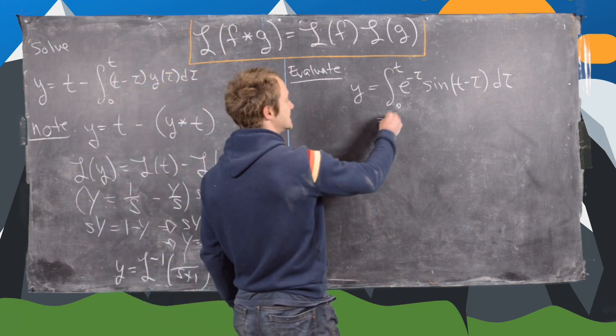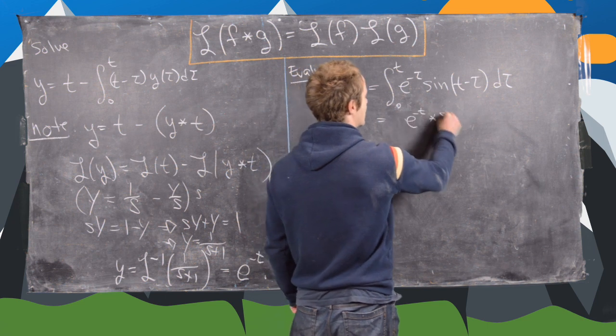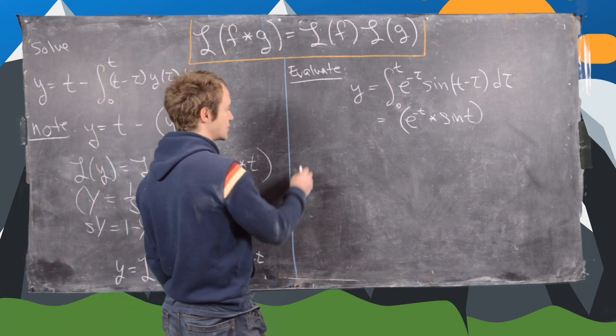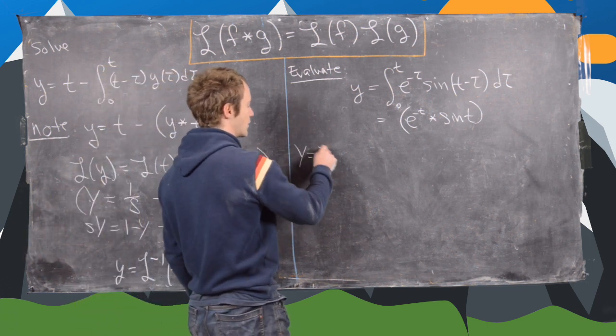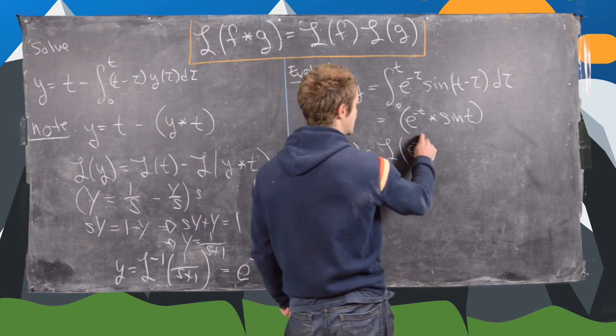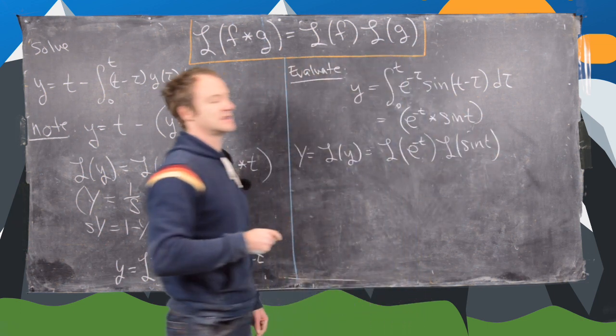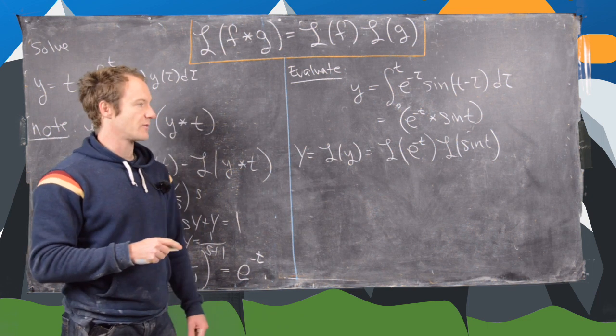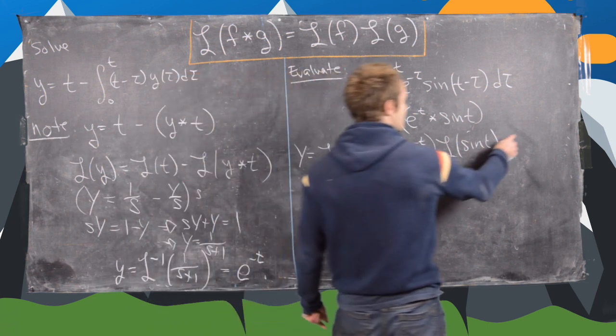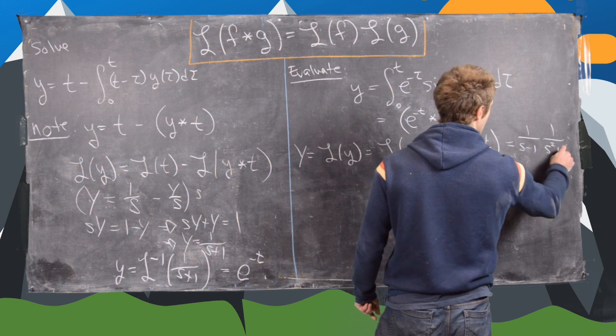What we'll first notice is that this is also a convolution, so this is e to the minus t convolution sine of t. Now when we take the Laplace transform, we get capital Y equals the Laplace transform of e to the minus t times the Laplace transform of sine t, again using this orange boxed formula. I have a video where I prove this formula, by the way, if you want to look for it. And now this is going to be one over (s minus one) times one over (s squared plus one).